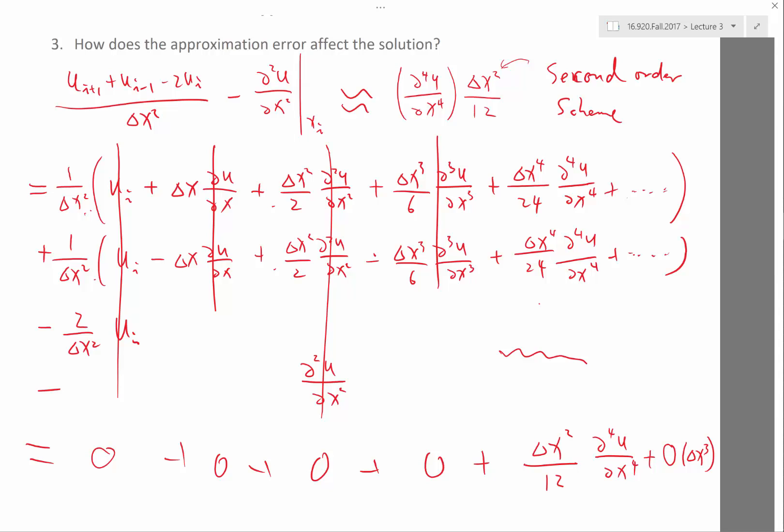So if you decrease delta x by a factor of 10, your error goes down by a factor of 1,000, right? So these are the order of the scheme.